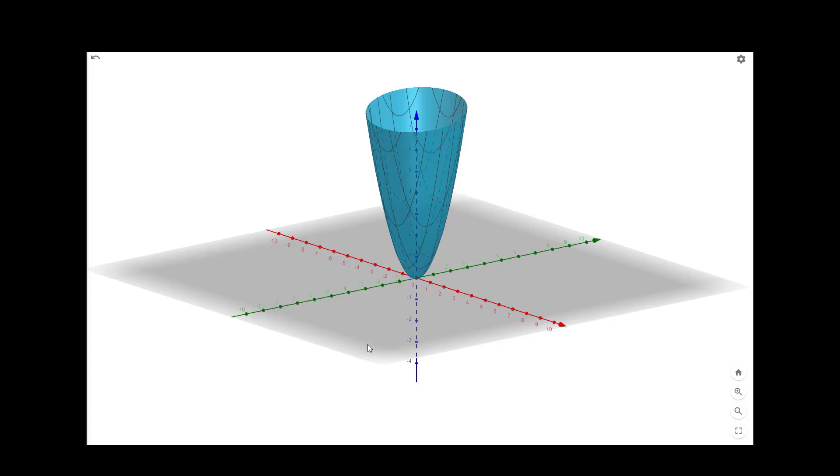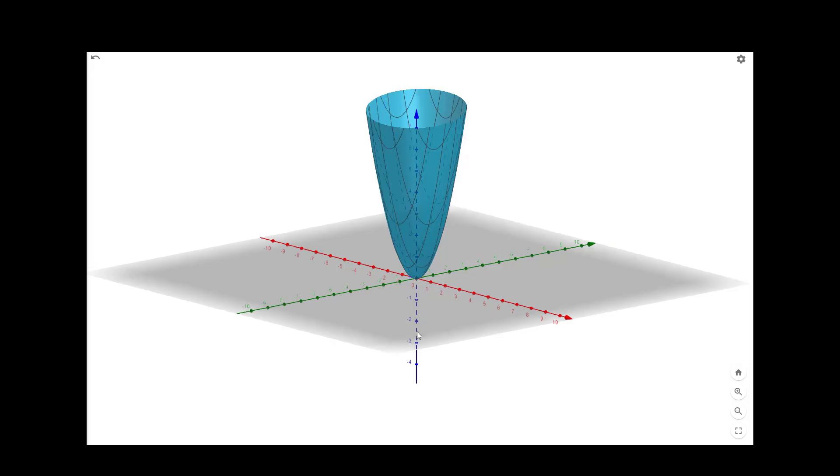Basically the function value is always positive. Zero is the minimum one. At the origin, it is attaining the minimum. The origin is basically the minimum of this function. Thank you.